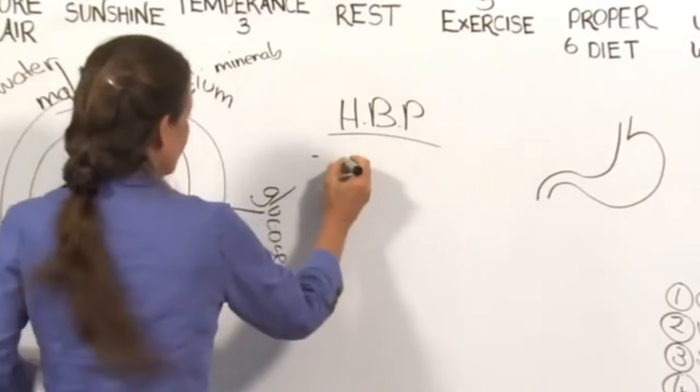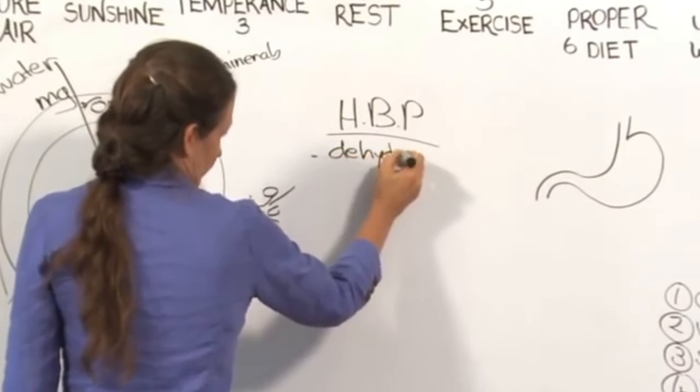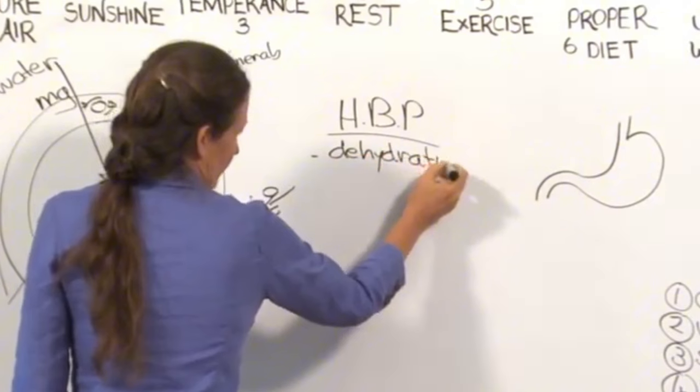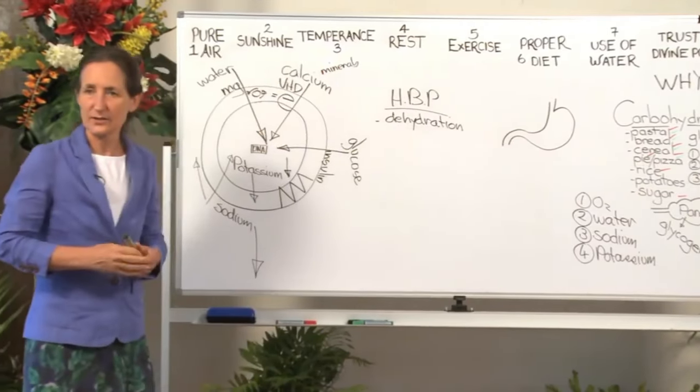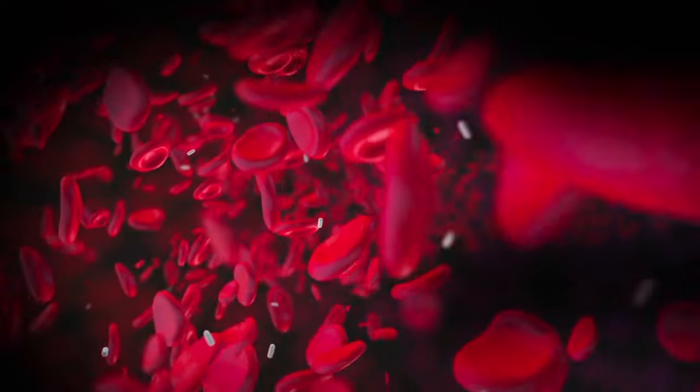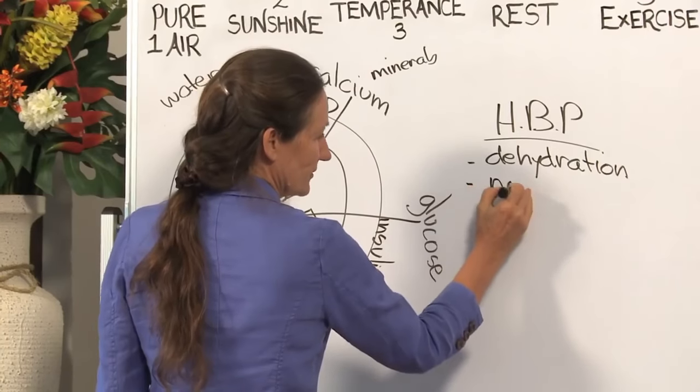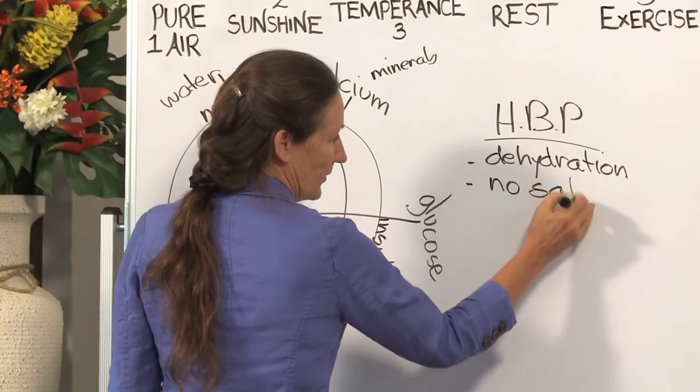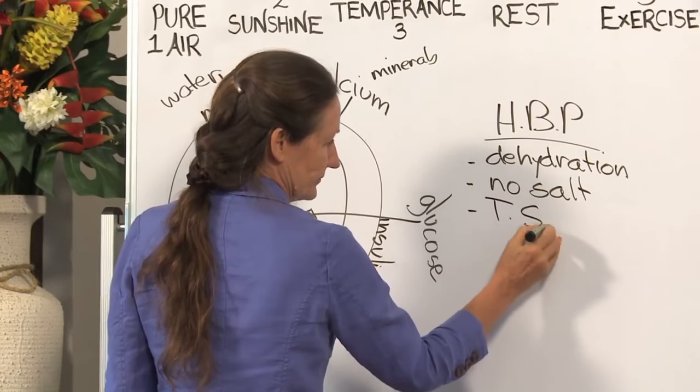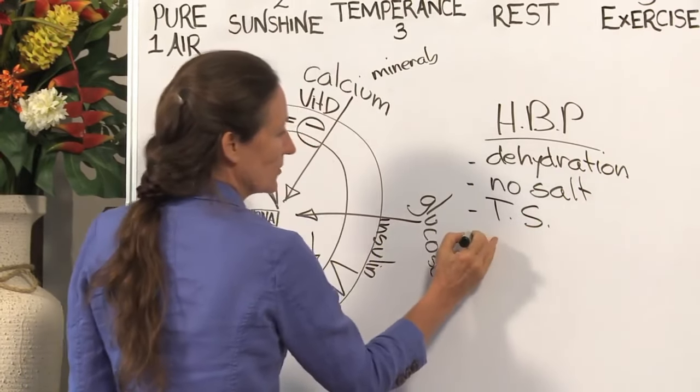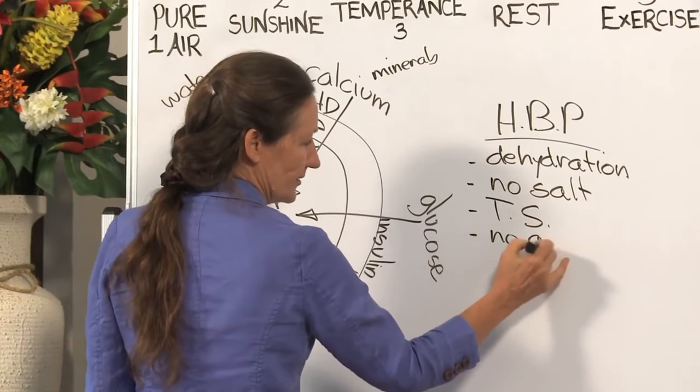High blood pressure can be caused by dehydration. In dehydration, little capillary networks shut down to try and conserve full blood volume. That builds up pressure. High blood pressure can be caused by no salt. High blood pressure can be caused by table salt. High blood pressure can be caused by no greens.